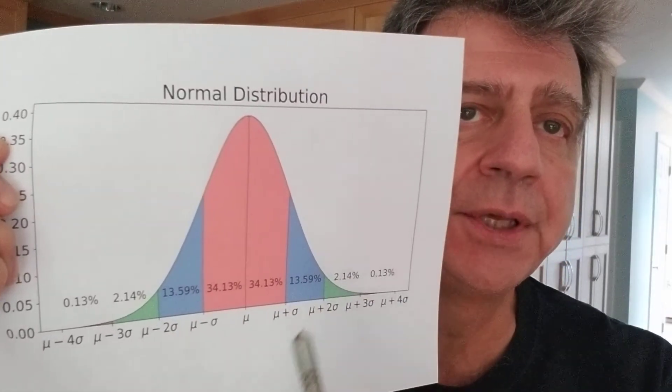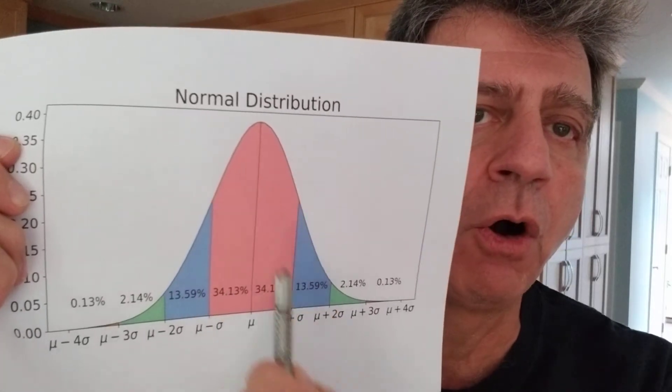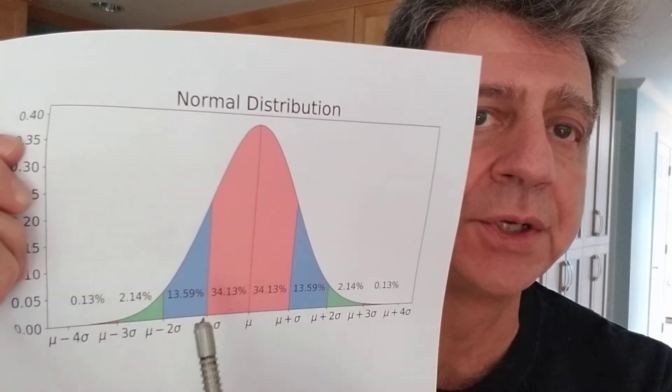But the reality is, the bell curve defines normal. We are all under the curve. If we're alive, we think we're under the curve.